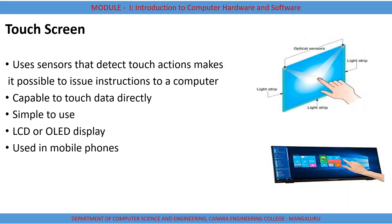Touch screen panels can be seen in mobiles nowadays, and even laptops or some desktops also have touch screens. Through a touch screen you can enter data — if you touch a particular item, that data is taken as input. It uses sensors that detect touch actions, making it possible to issue instructions to the computer. Internally, a sensor senses what data has been selected and passes it to the computer.